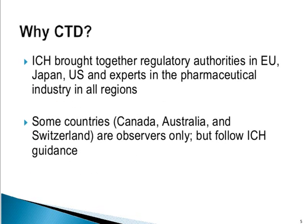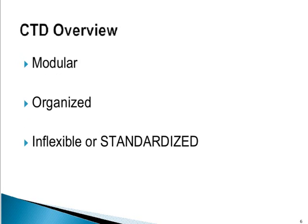The International Conference on Harmonization was a conference put together by regulatory authorities from the EU, Japan, US, and additional experts in the pharmaceutical industry all over the globe. Some countries are observers of ICH, but they typically will follow ICH even though they weren't part of the whole ICH conference — and that would be like Canada, Australia, Switzerland, and a few other countries as well.